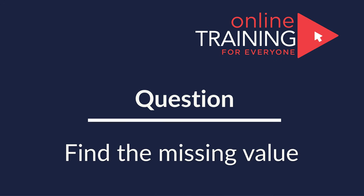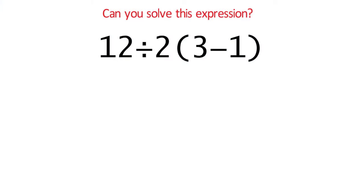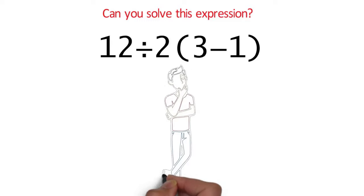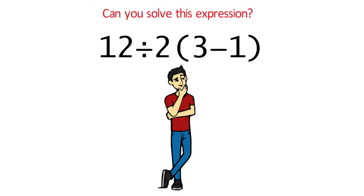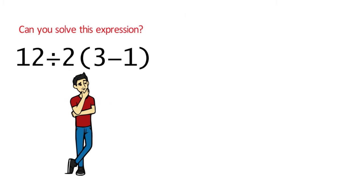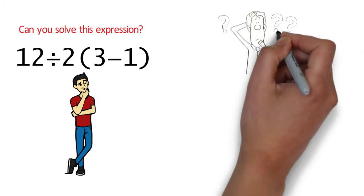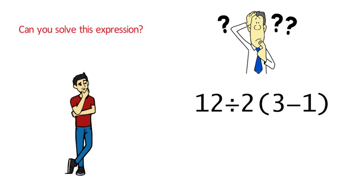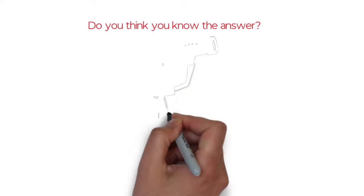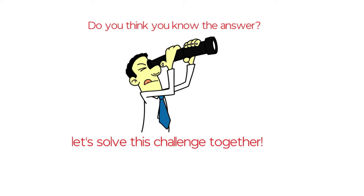Here's an interesting question — easy to understand but fun to solve. Calculate the expression: 12 divided by 2, then multiplied by the value in parentheses (3 minus 1). Take a close look and see if you can come up with the answer. There are three operations here: division, multiplication, and subtraction. All you need to determine is which to do first, second, and third.